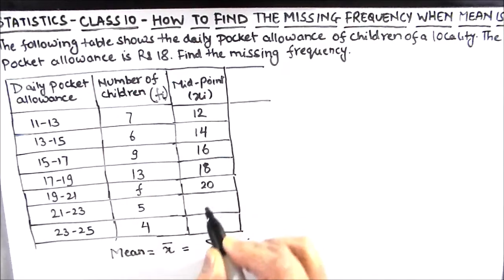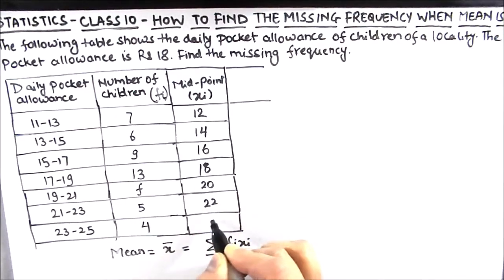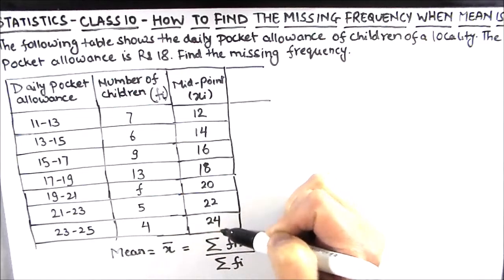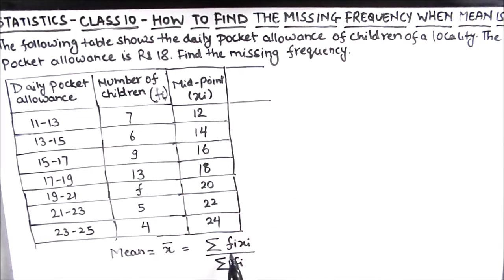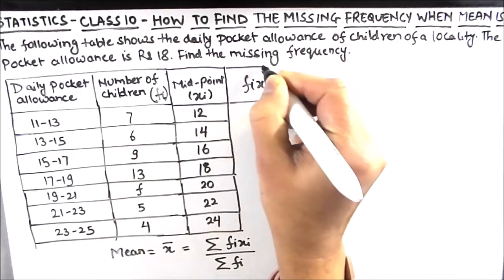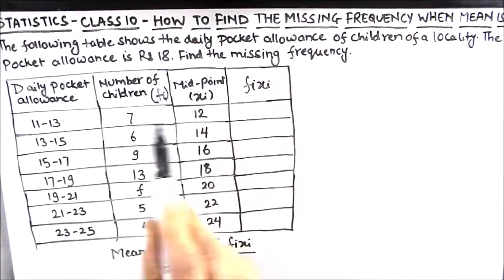Next we will find the product of frequency and the midterm. The midpoints are 12, 14, 16, 18, 20, 22, 24. So 12 times 7...